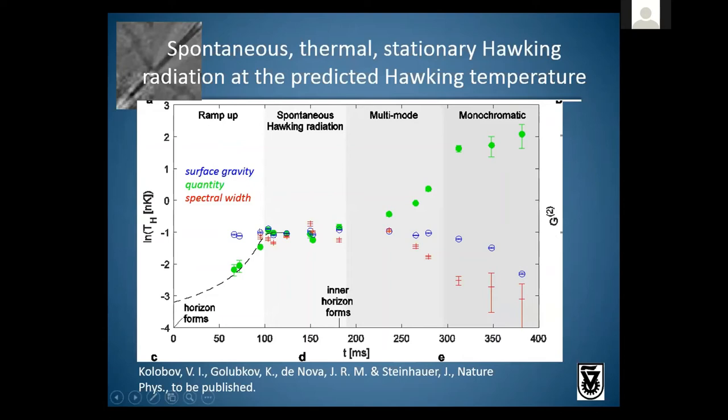The fact that the spectral width agrees with the quantity implies that the spectrum is approximately thermal. So we have spontaneous Hawking radiation with a thermal spectrum. It's approximately stationary — constant throughout this spontaneous period — and it's at the predicted Hawking temperature because it agrees with the blue circles.